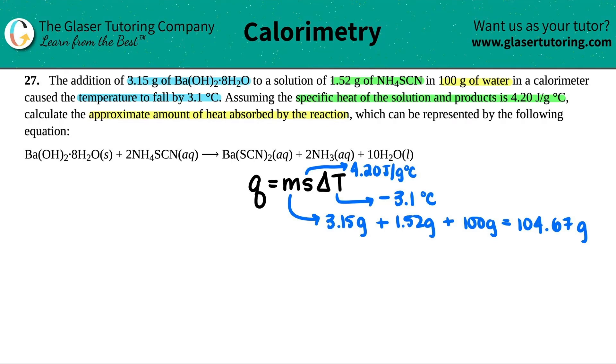Now we have everything. Let's find the Q of the solution. Q would be 104.67 times 4.20 times negative 3.1. Let's see what we get. With 2 sig figs, that would be negative 1.4 times 10³ joules.